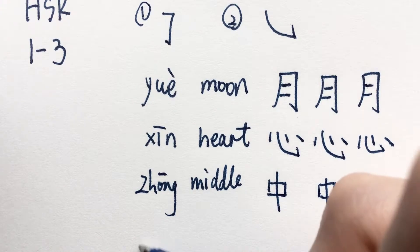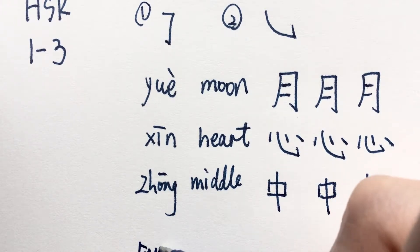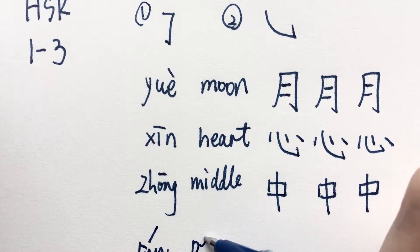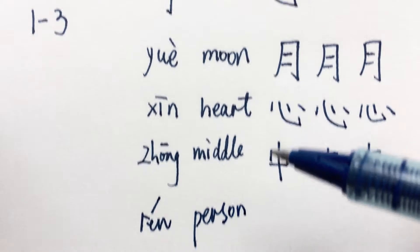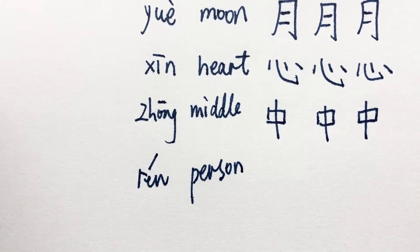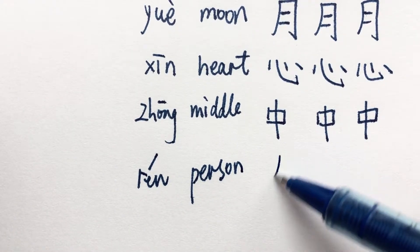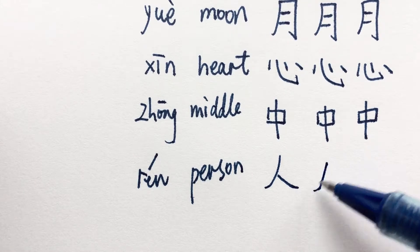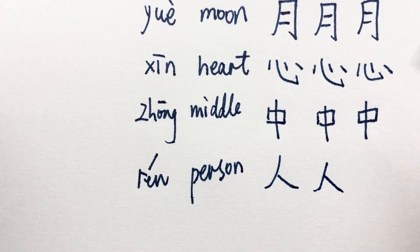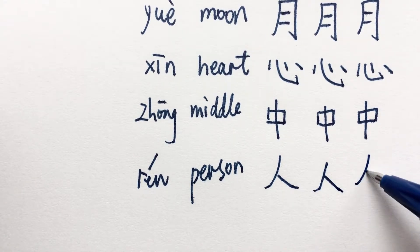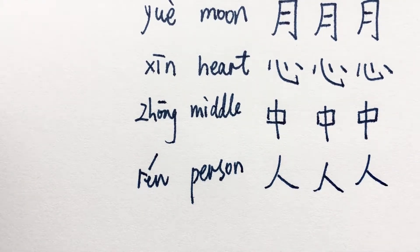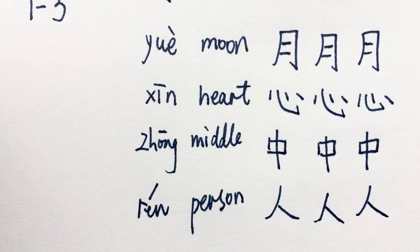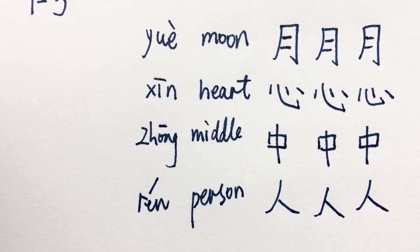The next word is 人, it means person. If you say 中国人, that means China person, which is Chinese. 人 has two strokes: 撇 and 捺, left falling and right falling.